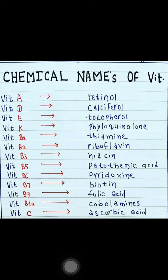The chemical name of Vitamin B1 is thiamine. The chemical name of Vitamin B2 is riboflavin. The chemical name of Vitamin B3 is niacin. The chemical name of Vitamin B5 is pantothenic acid.